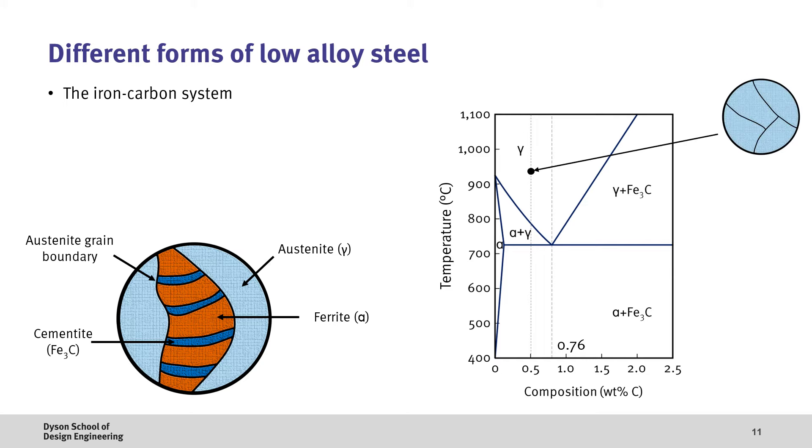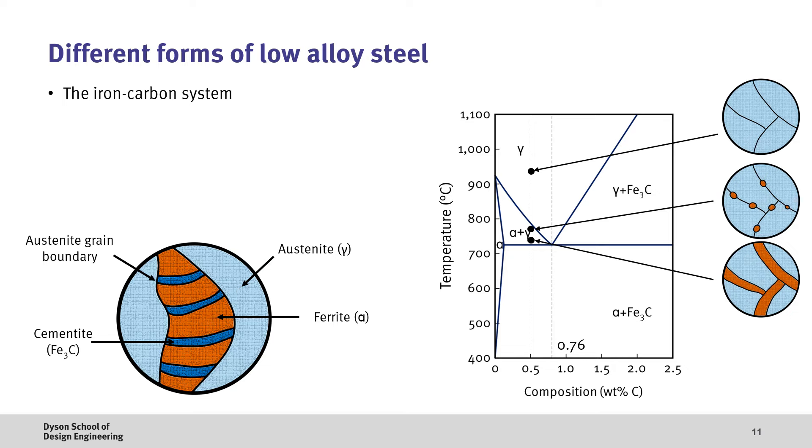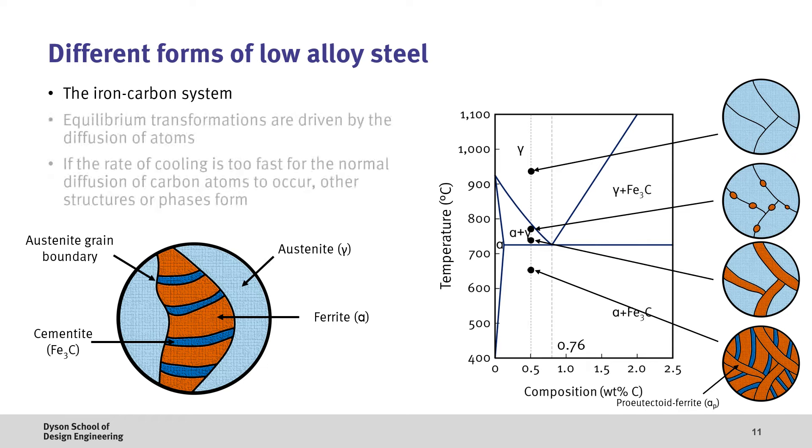As we cool the material down, we enter into a two-phase austenite and ferrite region. And finally, as we continue to cool, we enter into a two-phase ferrite plus cementite region, where the remaining austenite has transformed into pearlite, which is held together by pro-eutectoid ferrite. Here, equilibrium transformations are driven by the diffusion of atoms. However, if the rate of cooling is too fast, then the carbon atoms don't have enough time to reach their thermodynamically stable locations, resulting in the formation of other structures or phases.